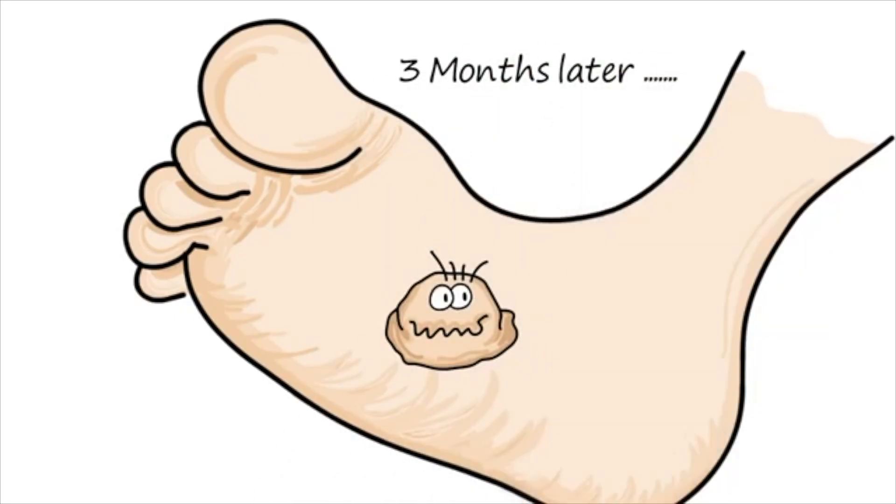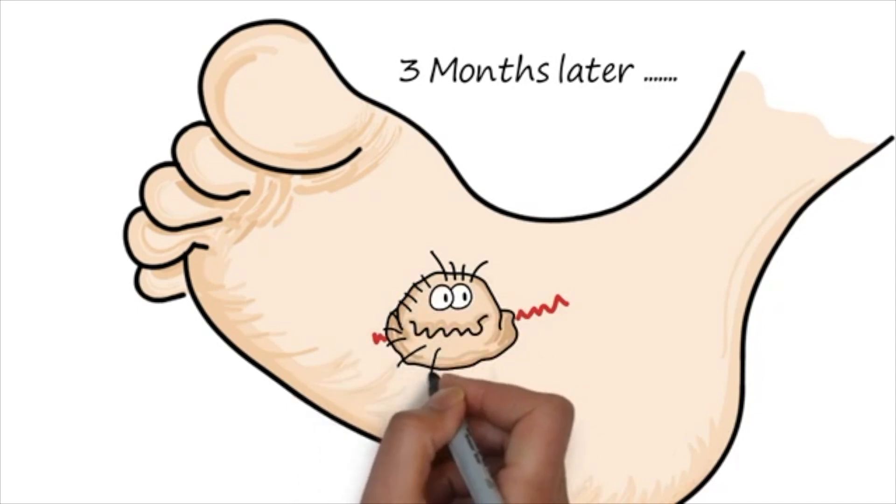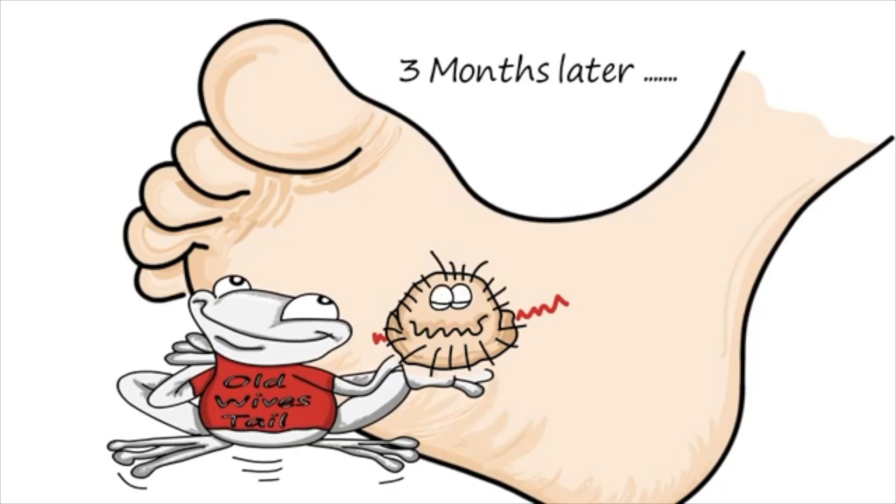Once it makes itself at home, and its incubation period can be up to three months, it starts to form a small lesion on the toe or the bottom of the foot. This is the plantar wart, or verruca as it's sometimes known.